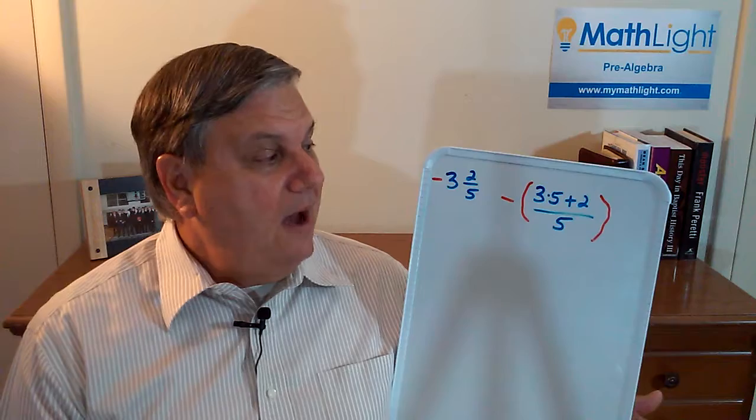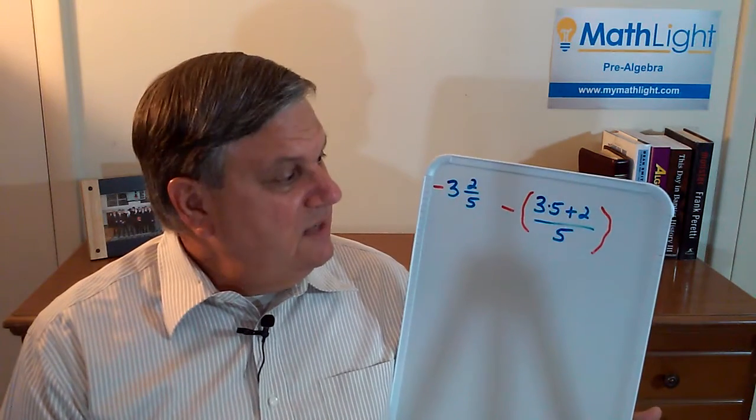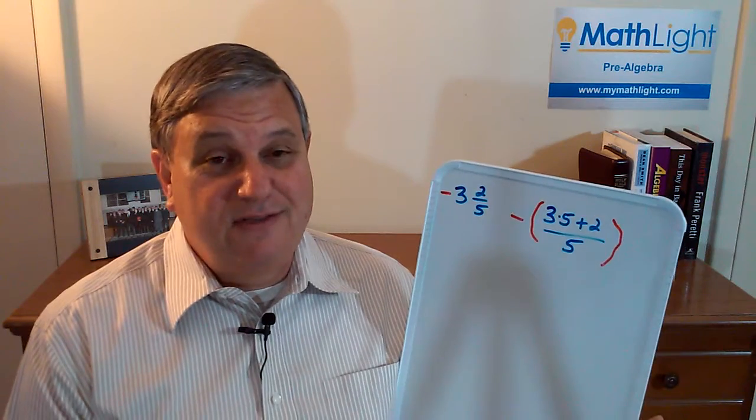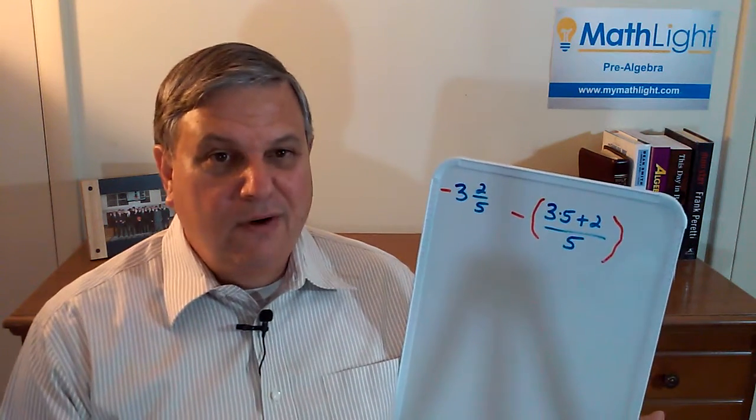What are they going to get now? 3 times 5 is 15 plus 2 is 17 divided by 5, negative 17 fifths. Bingo. Right answer.